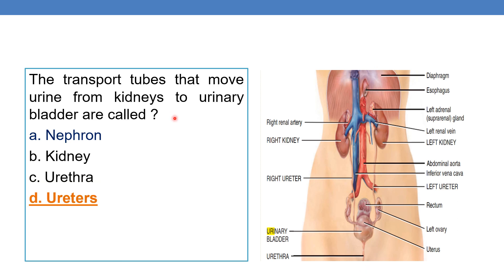Next: the transport tubes that move the urine from the kidneys to the urinary bladder are called ureters. Here you can see the kidney, and the tube coming out of the kidney is the right ureter, and this one is the left ureter. Ureters are the transport tubes that move urine from the kidneys into the urinary bladder.